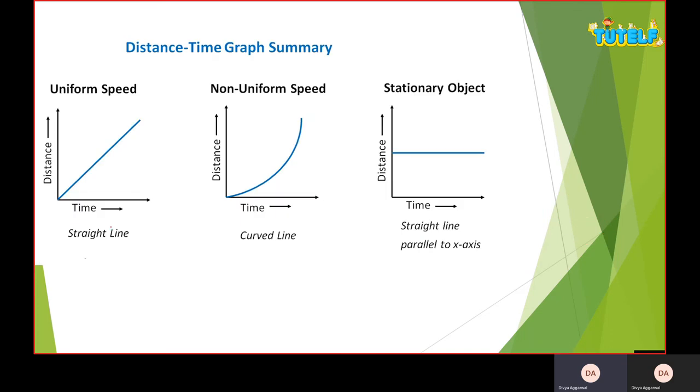So a straight oblique line if I have uniform speed. I have curved line for non-uniform speed. Now this is the stationary object. Look at the distance, for example, this was 10m and 20m. So as time is increasing, my distance is continuously the same. This means that my object is not moving, it is stationary or resting.